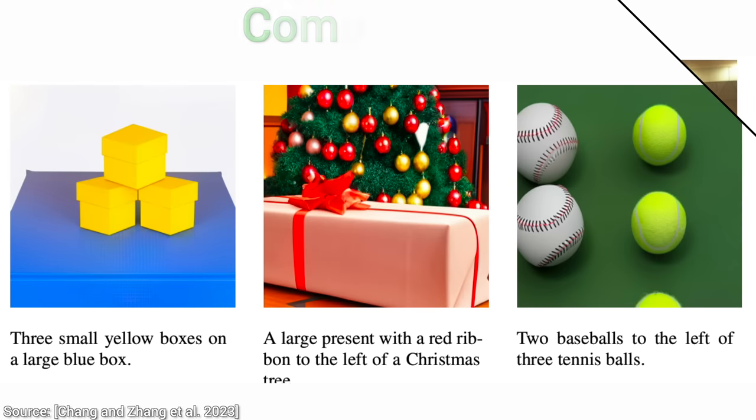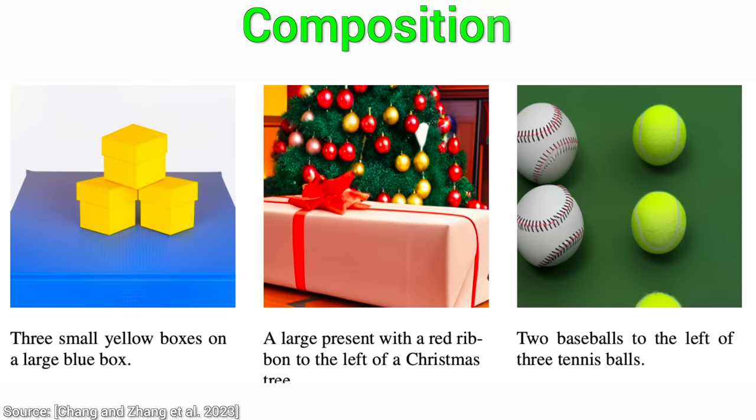It also does well when it comes to composition. If we ask for the two baseballs to be to the left of the tennis balls, the AI understands that, and thus they will likely end up being there.